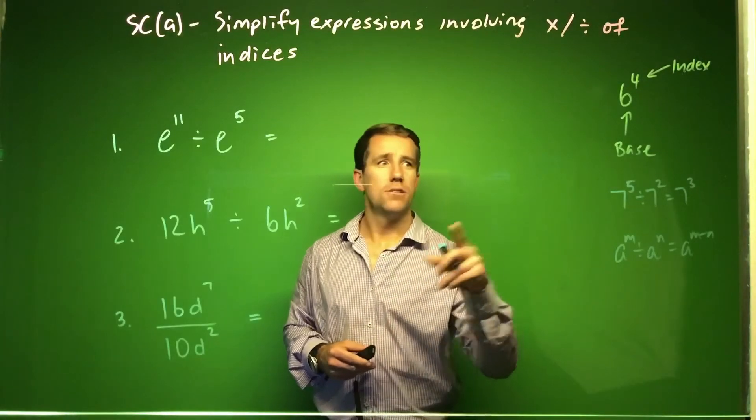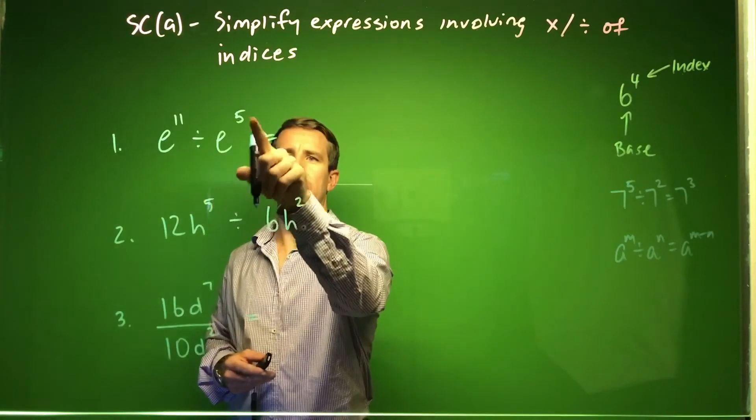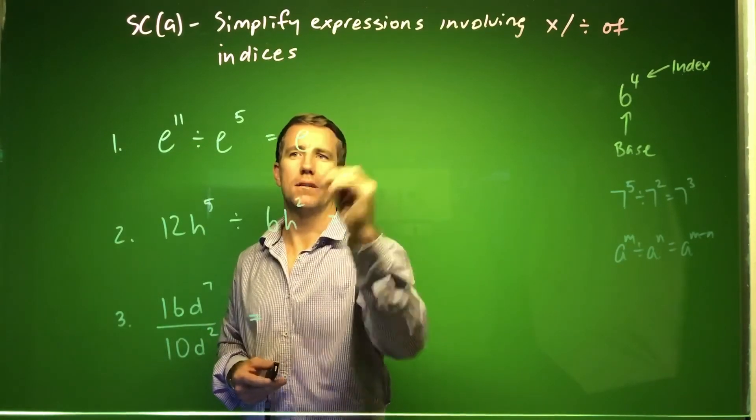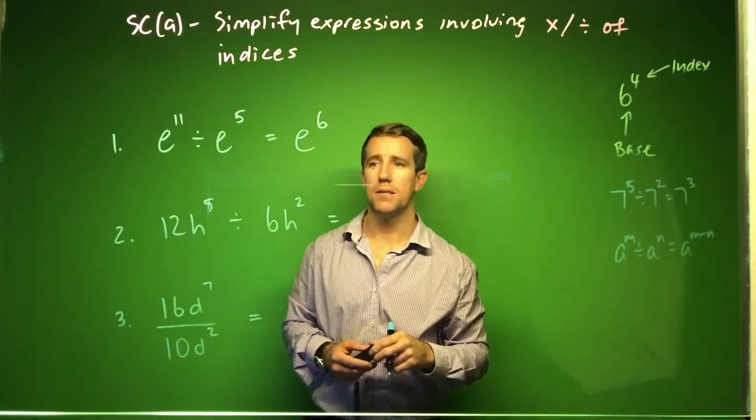A few examples now, applying this index law number 2. We've got e to the power 11 divided by e to the power 5. We've got the same base, so that's going to remain the same, and 11 take 5 will get us 6, so we've got e to the power 6.